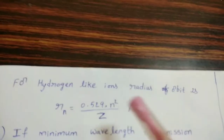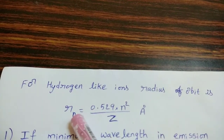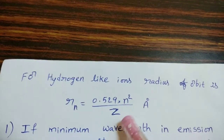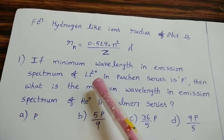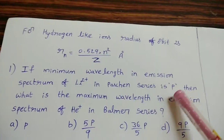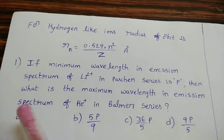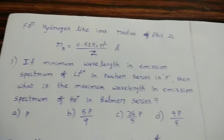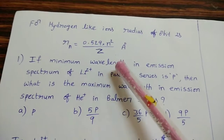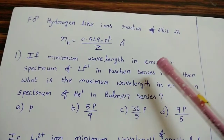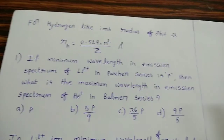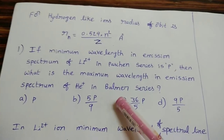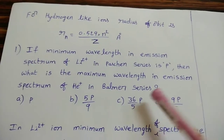For hydrogen-like ions, the radius of the orbit is r = 0.529 × n²/Z angstrom units, where Z is the atomic number and n is the orbit number. Now a Rydberg equation related question: if the minimum wavelength in the emission spectrum of Li2+ in the Paschen series is P, what is the maximum wavelength in the emission spectrum of He+ ion in the Balmer series? In Li2+, Paschen series has N₁ = 3; minimum wavelength means N₂ = infinity (the limiting line).